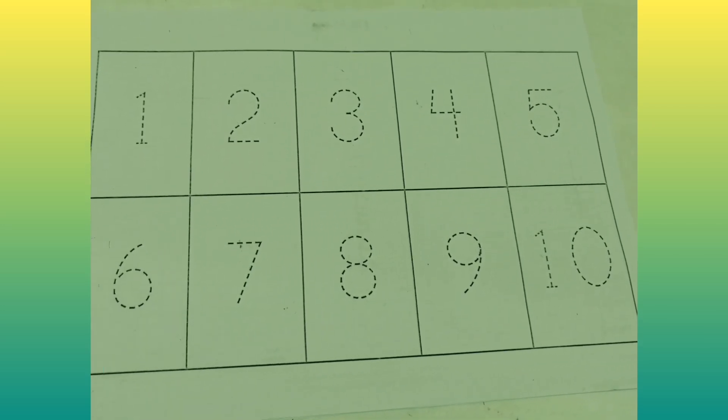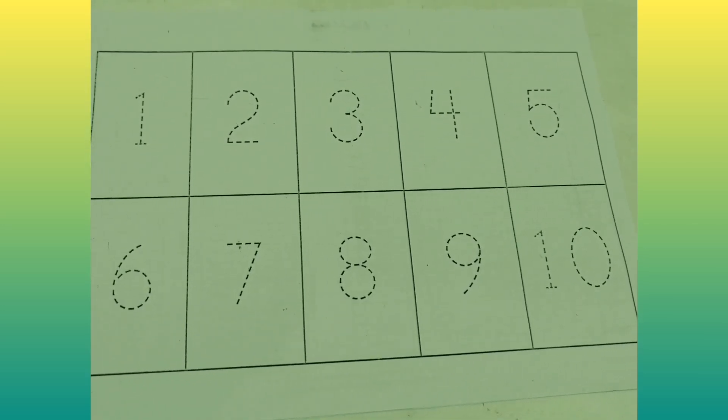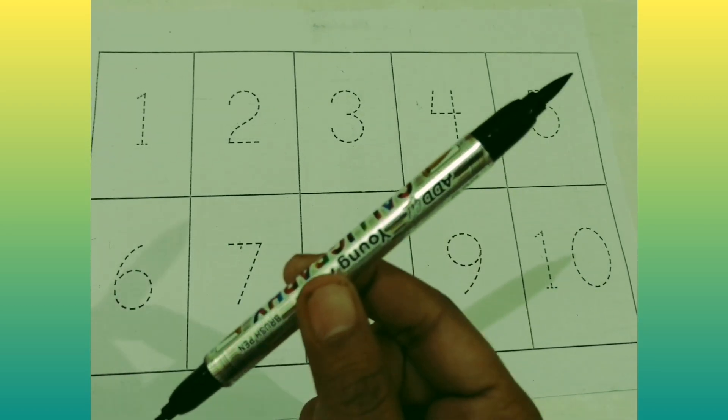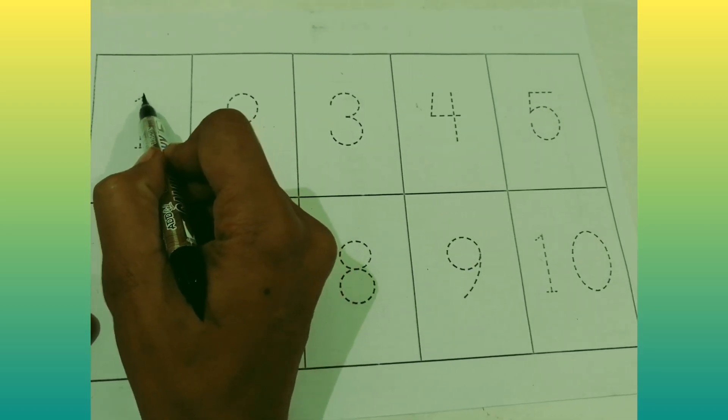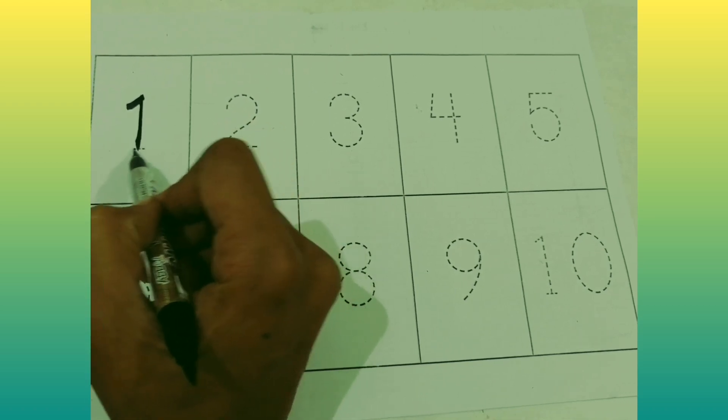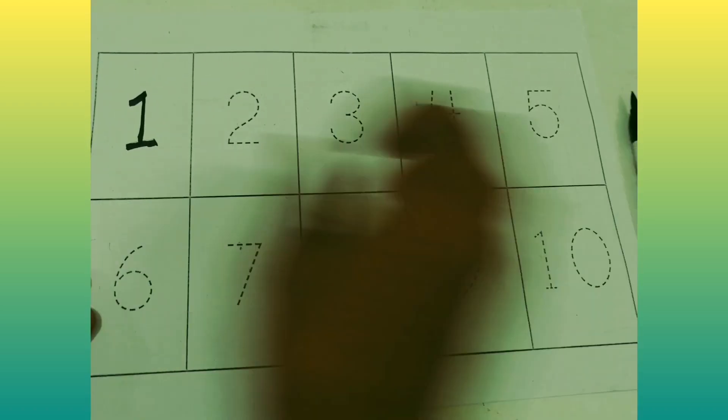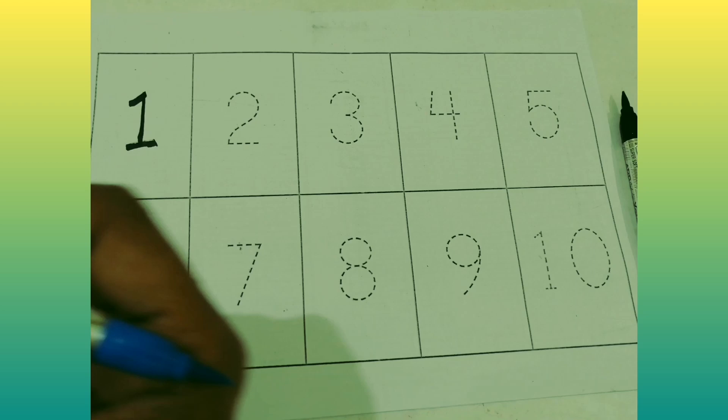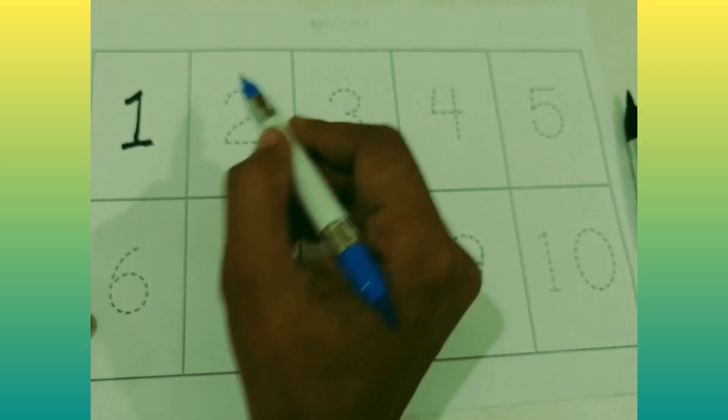Hello watching. Here is one set of counting numbers. Black color 1. Now sky blue color 2.